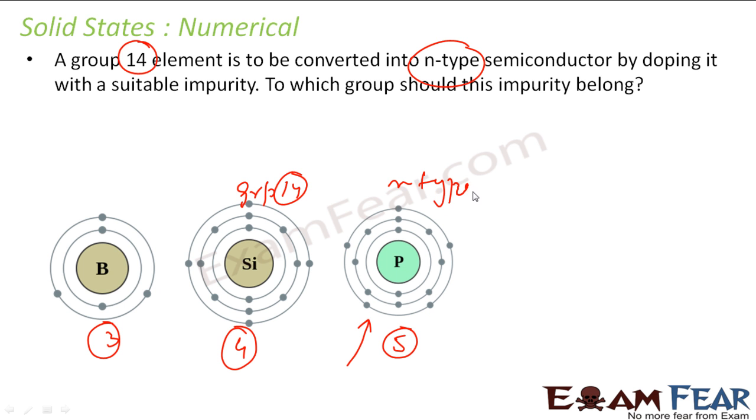This will give me N-type. If you want to make it P-type, I'll use group 13. This is my group 13, this is my group 15. The answer is, if my group 14 is the base element, if I want to dope it to make N-type, you have to use group 15 elements. If you want to make it P-type, you have to use group 13 elements.